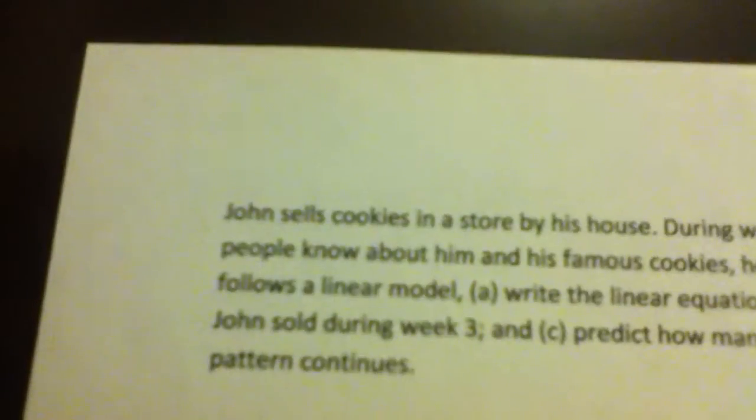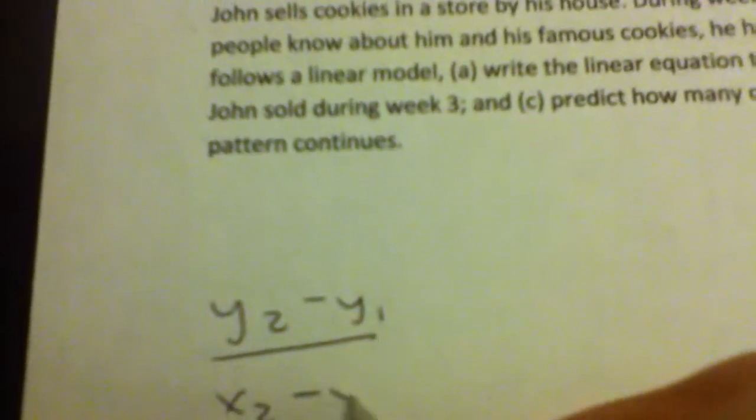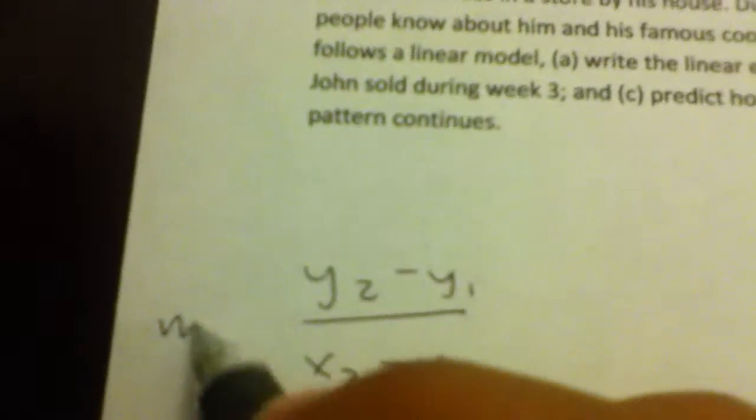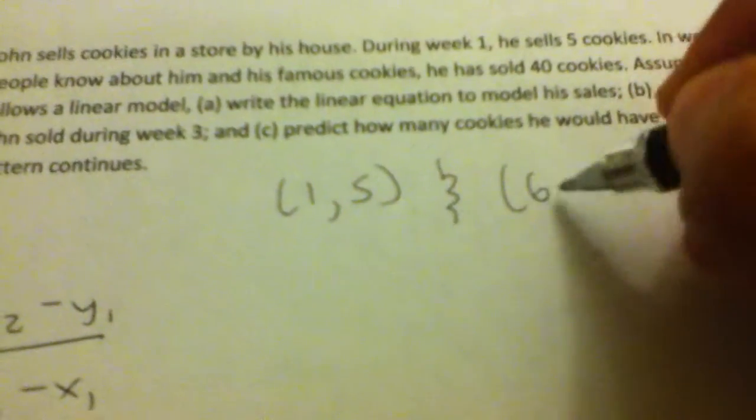The slope formula is y2 minus y1 over x2 minus x1. Now our coordinates are (1, 5) and (6, 40).